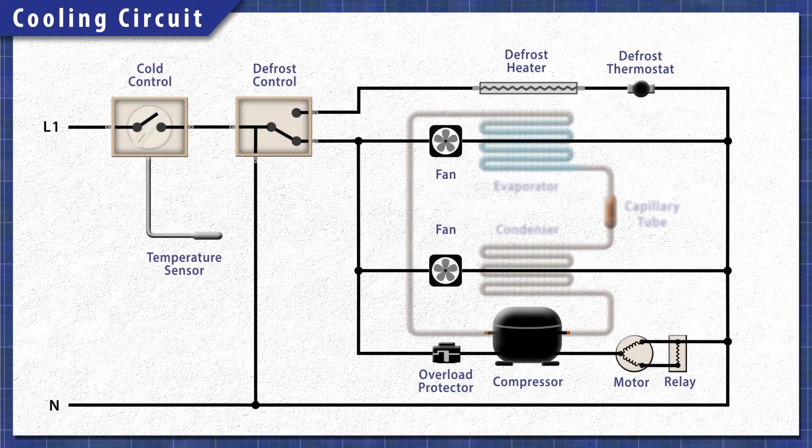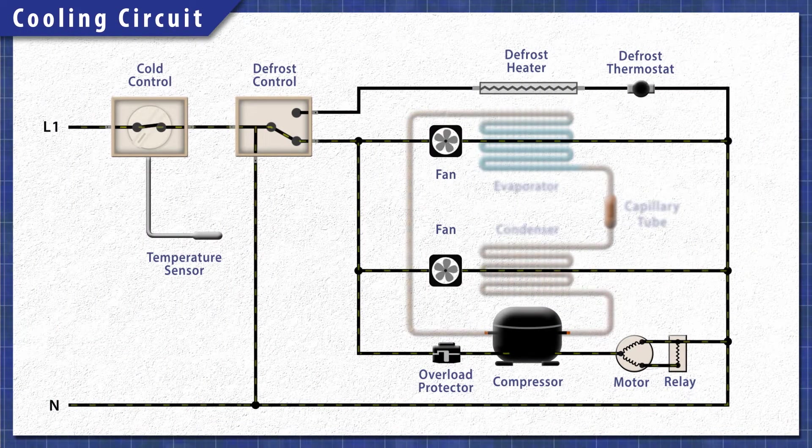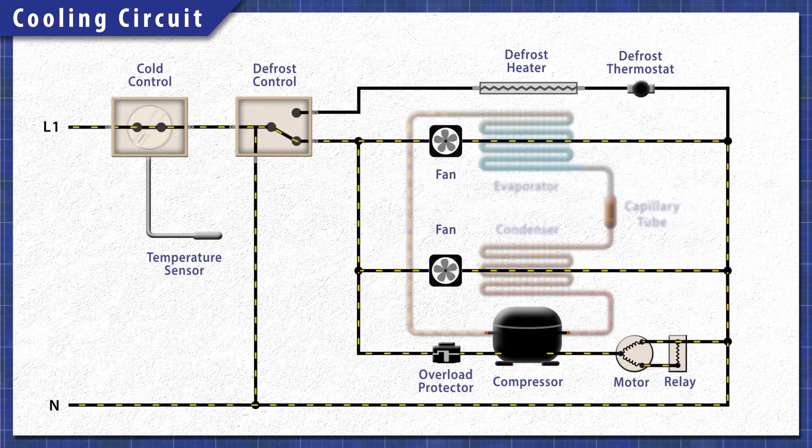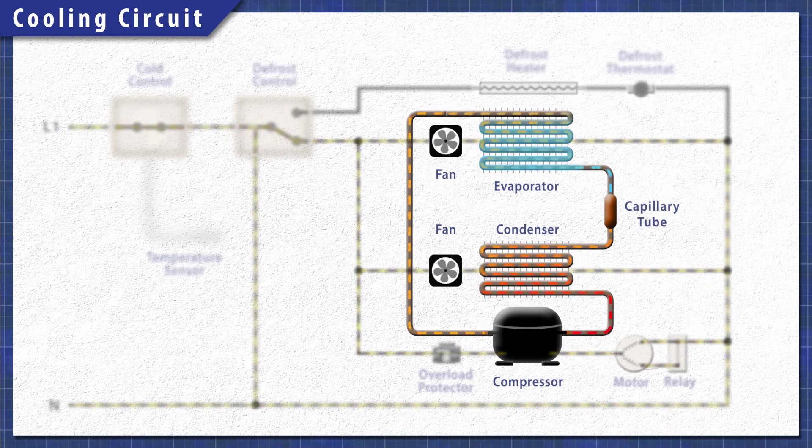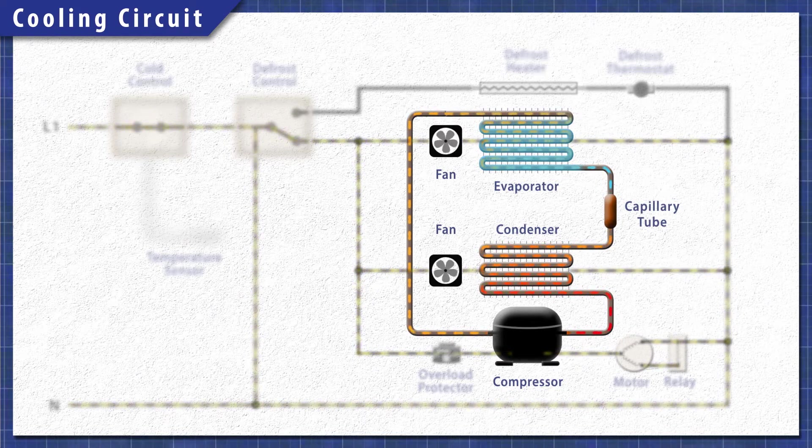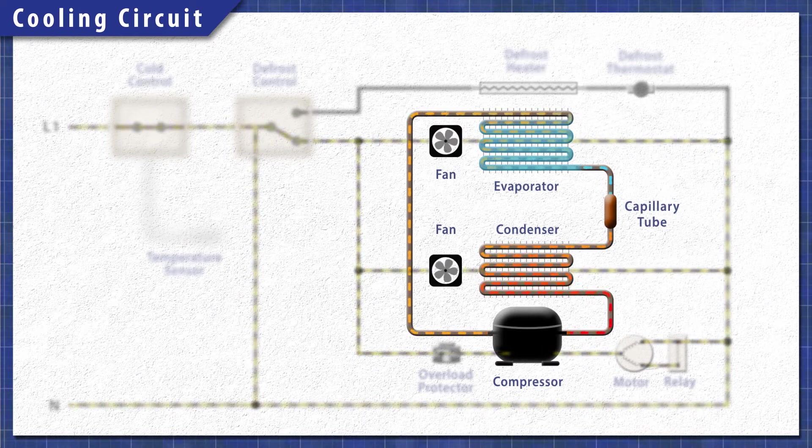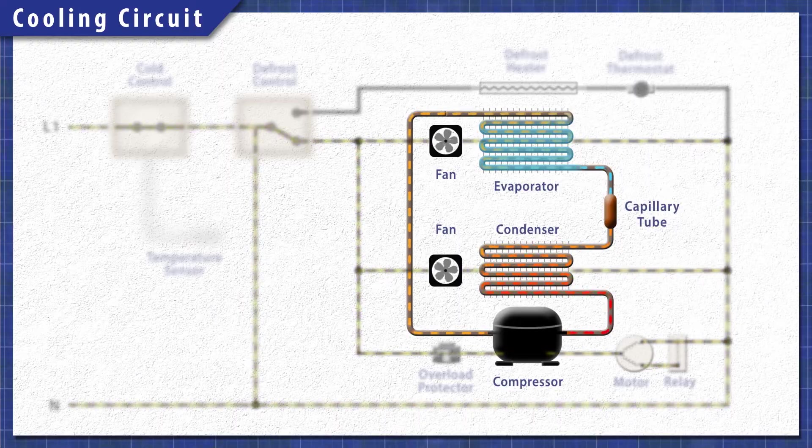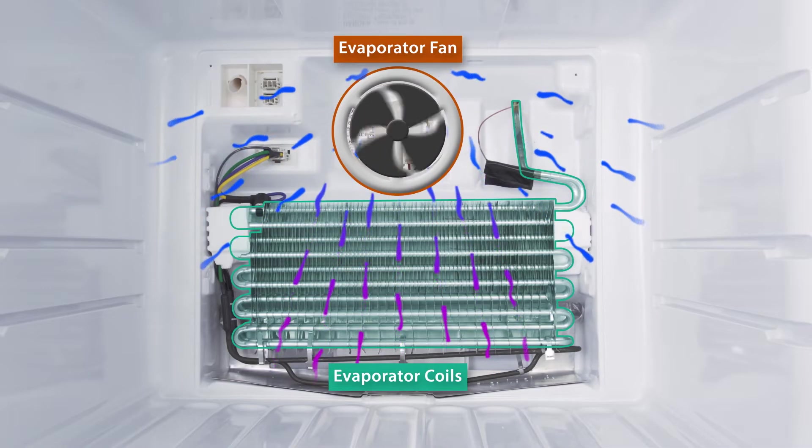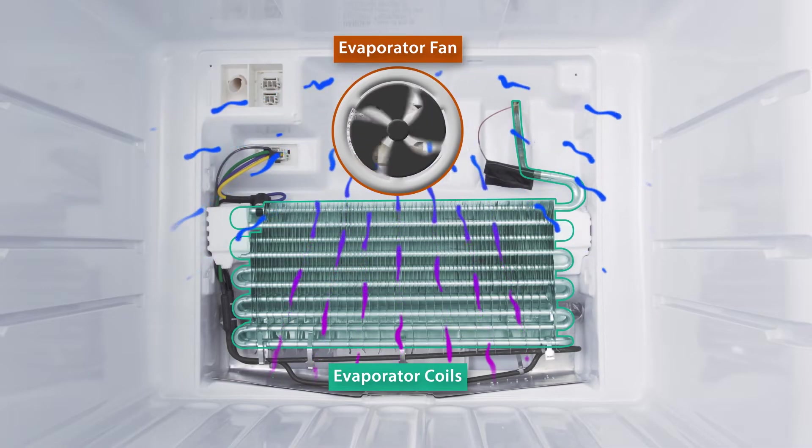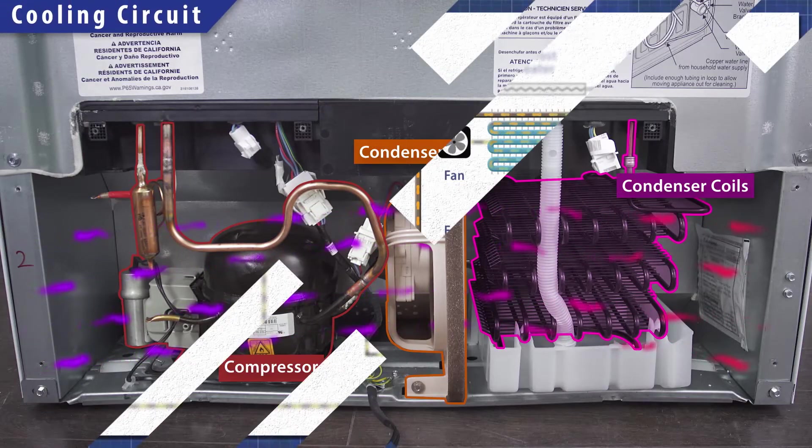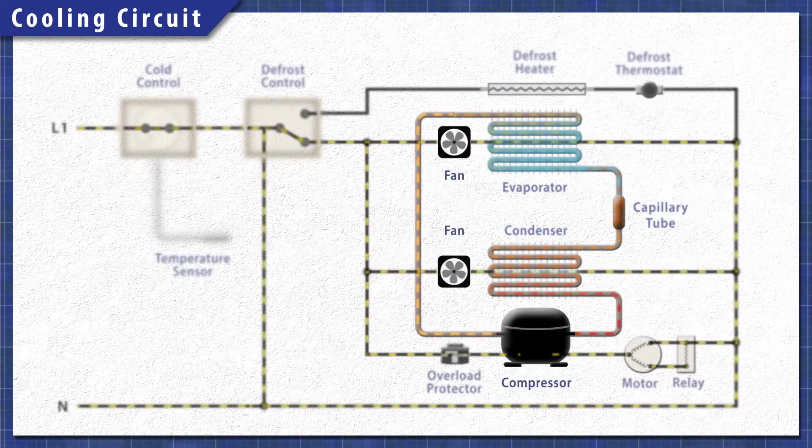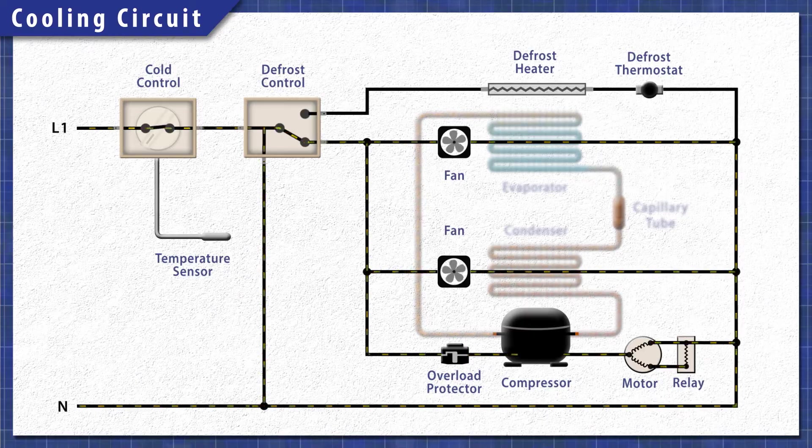All refrigerators work in the same basic way. When cooling is needed, the cold control sends power to the cooling circuit. The compressor pushes the refrigerant through the system. In the freezer, heat is extracted by the evaporator coils and is released through the condenser coils behind the refrigerator.